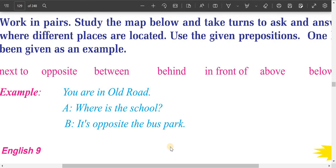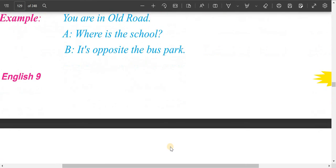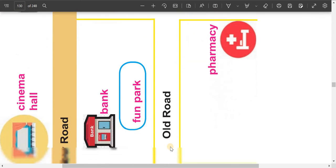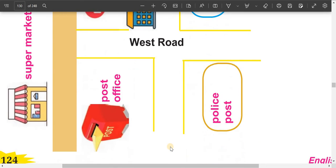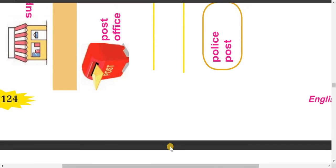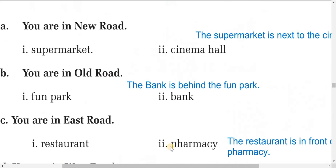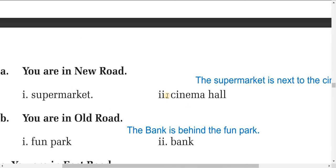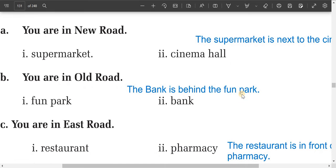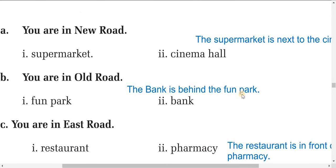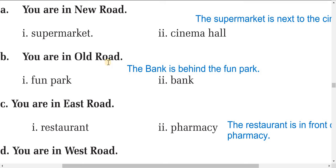Now let's do the next exercise on prepositions of location. Look at the map in your textbook and let's describe the relationships of places. First: the supermarket is next to the cinema hall — you can find this on the map. Second: you are on Old Road — the bank is behind the fun park.